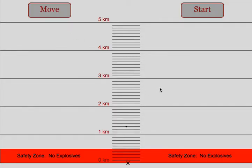Students will start out in a screen that will show them the location of the explosion and the location of their observing area. You'll notice that this one is starting out about 1.3 kilometers away from the student.